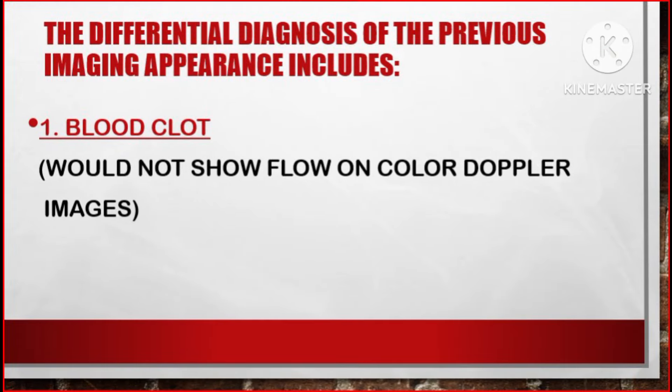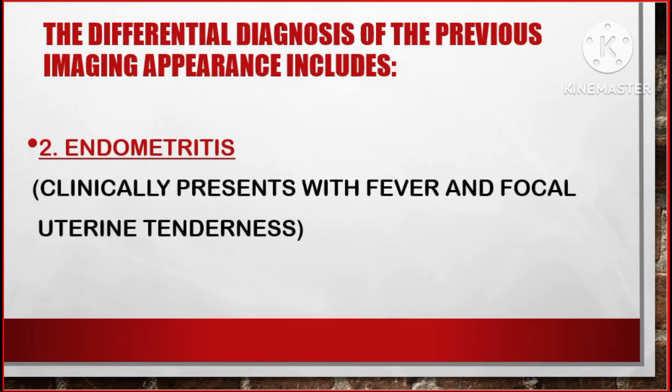Differential diagnosis of the previous imaging appearance includes: number one, blood clot — but it wouldn't show flow on color Doppler images. Number two, endometritis — but it clinically presents with fever and focal uterine tenderness.